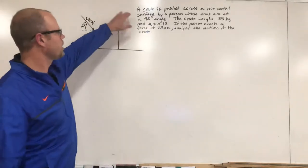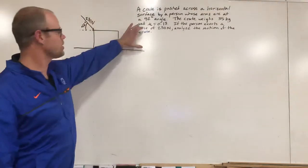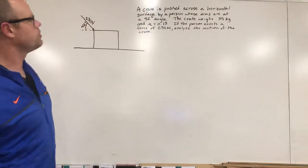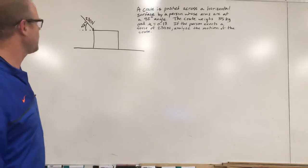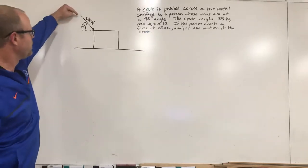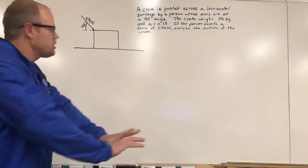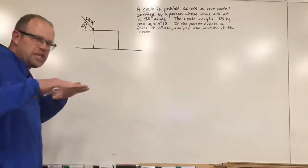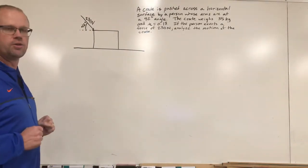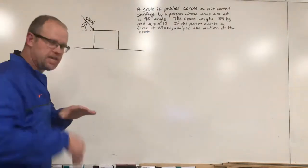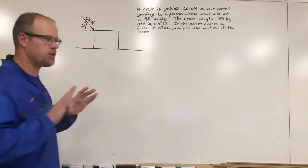This says a crate is pushed across a horizontal surface by a person whose arms are at a 42 degree angle. So I drew a vector here that represents their arms pushing along this crate, but they're not just pushing it directly horizontal, they're pushing down on it as well.